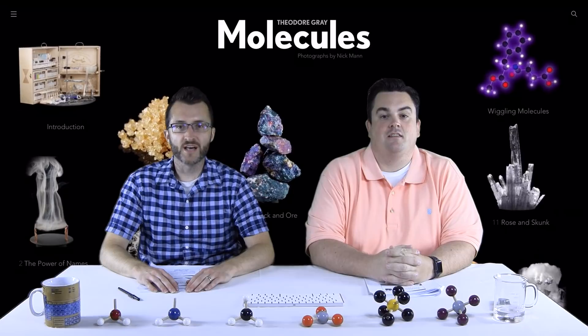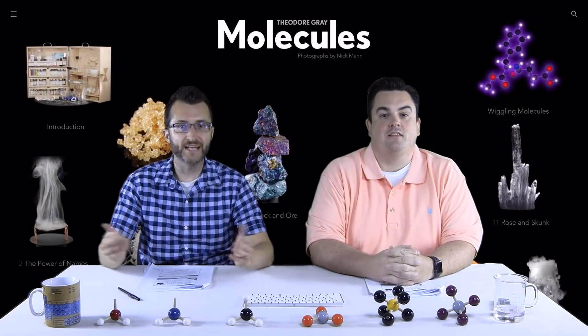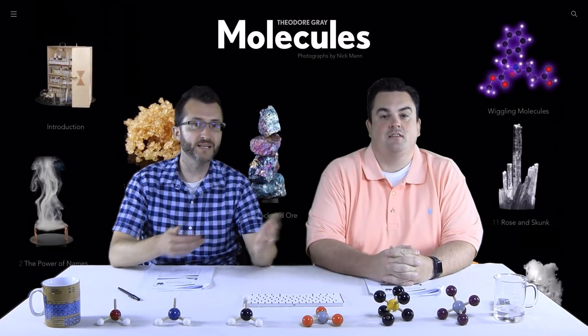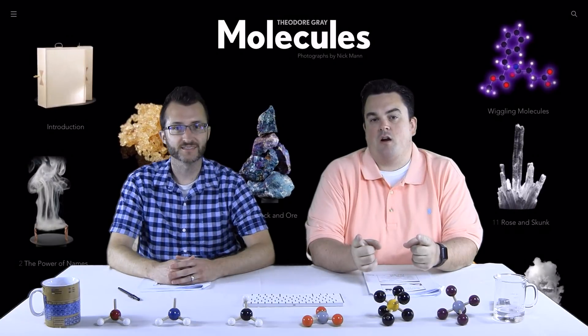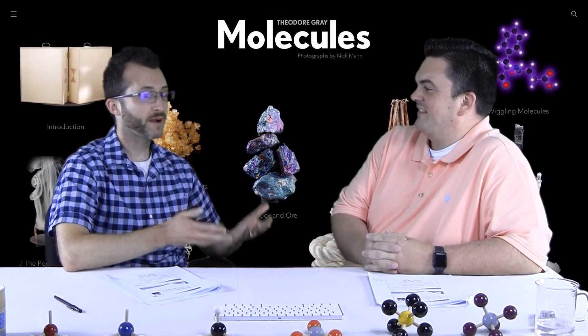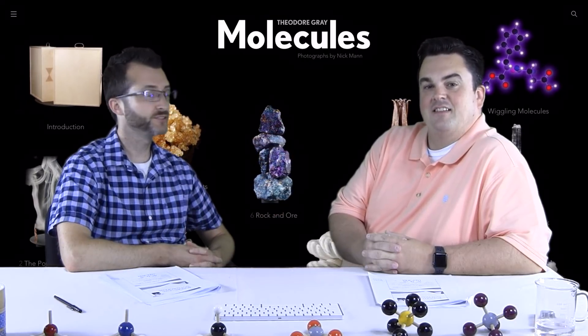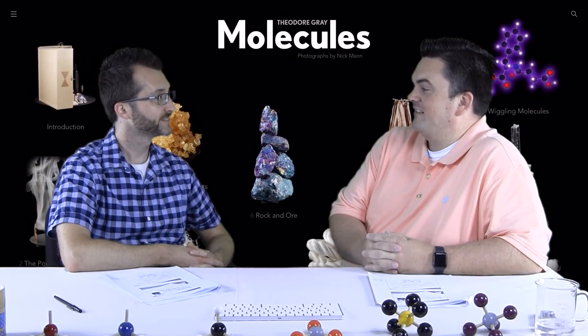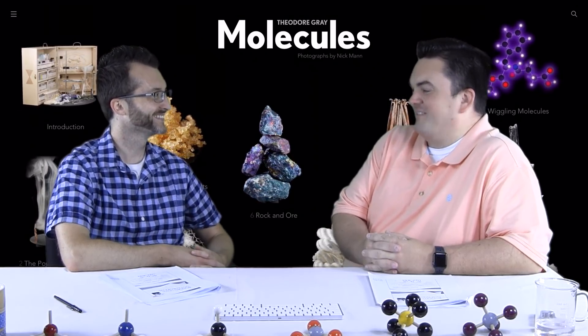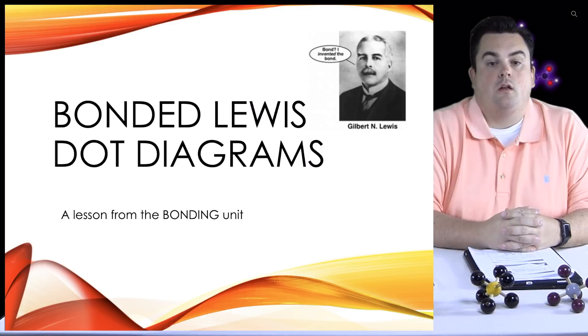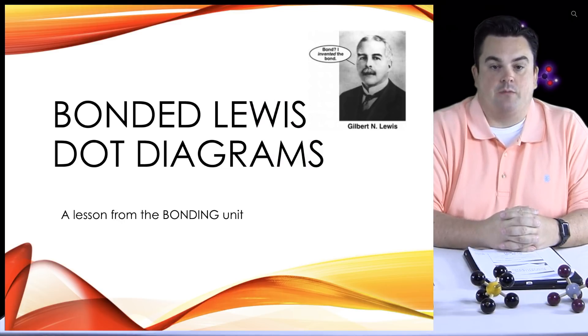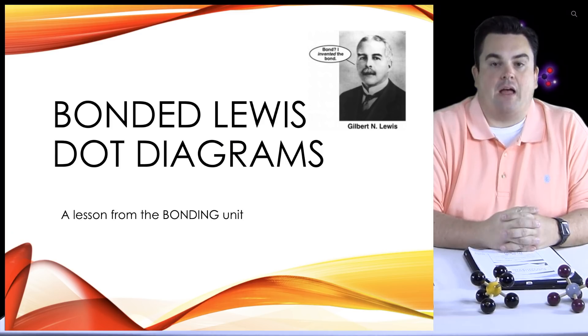Hello and welcome to another episode of Shufu Chem and Atcha. I'm your host Shufu, and with me as always is Fufu. What up, nerds? Today we're going to represent ionic and covalent structures using Lewis dot diagrams. True story, bro. Let's get started. Bonded Lewis dot diagrams, a lesson from the bonding unit.